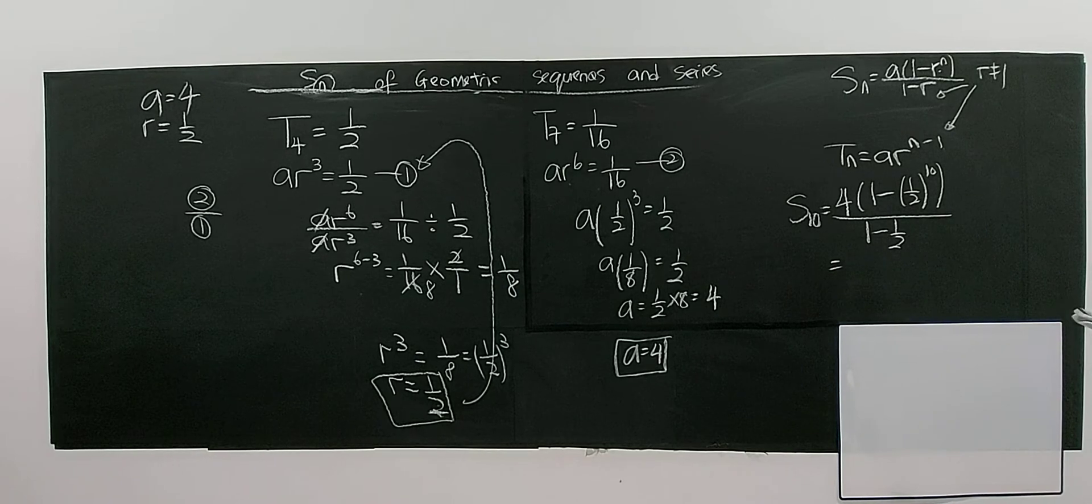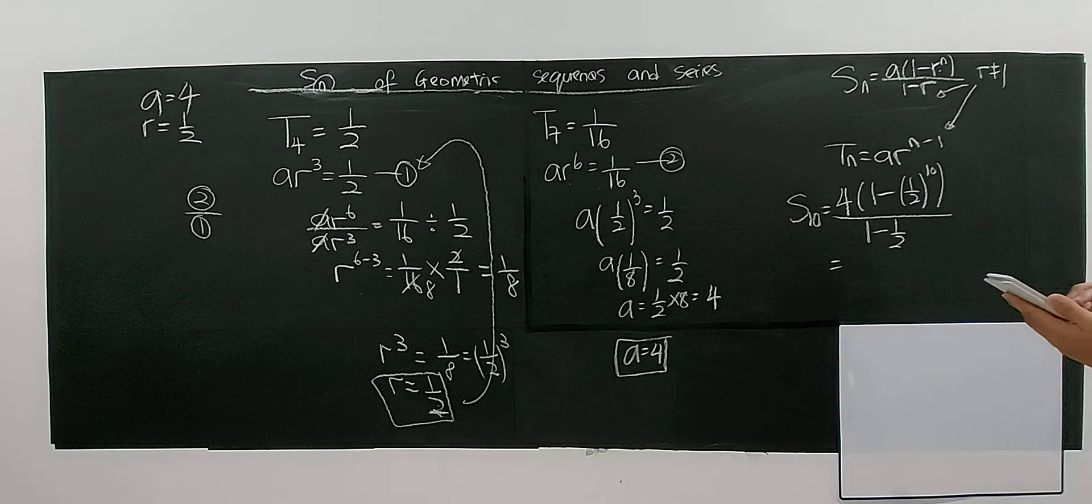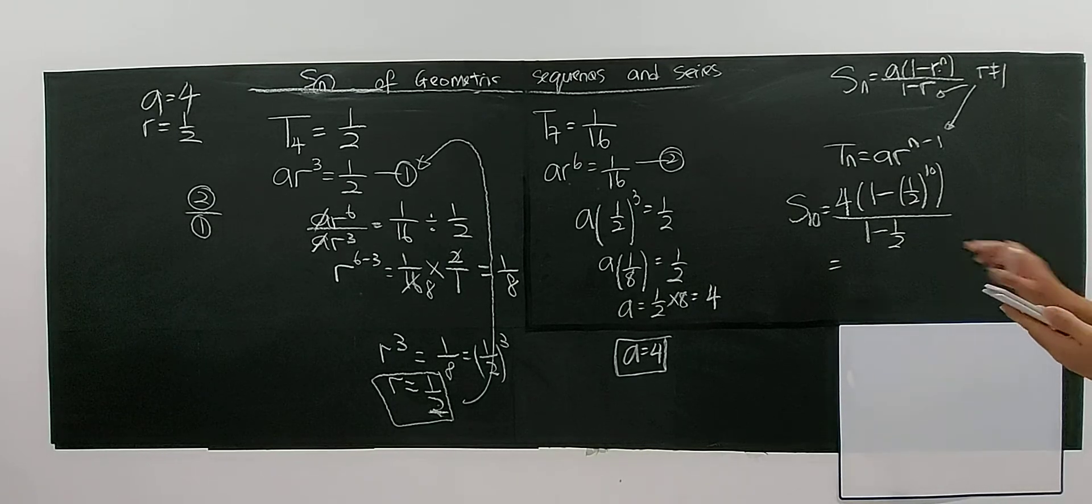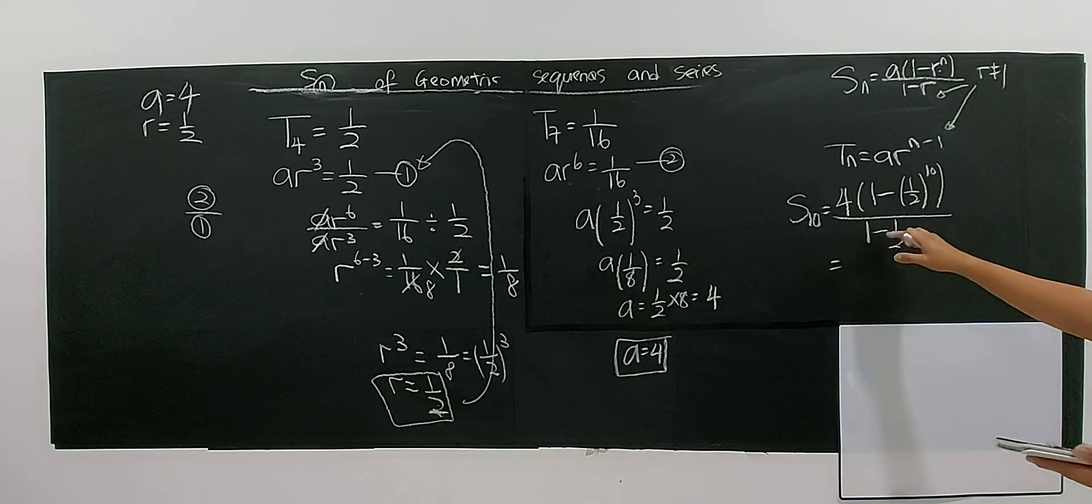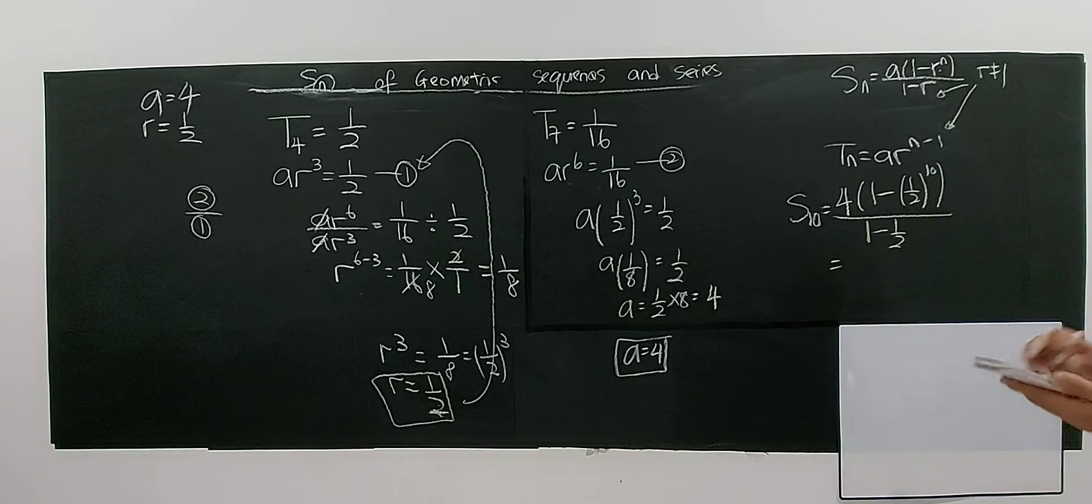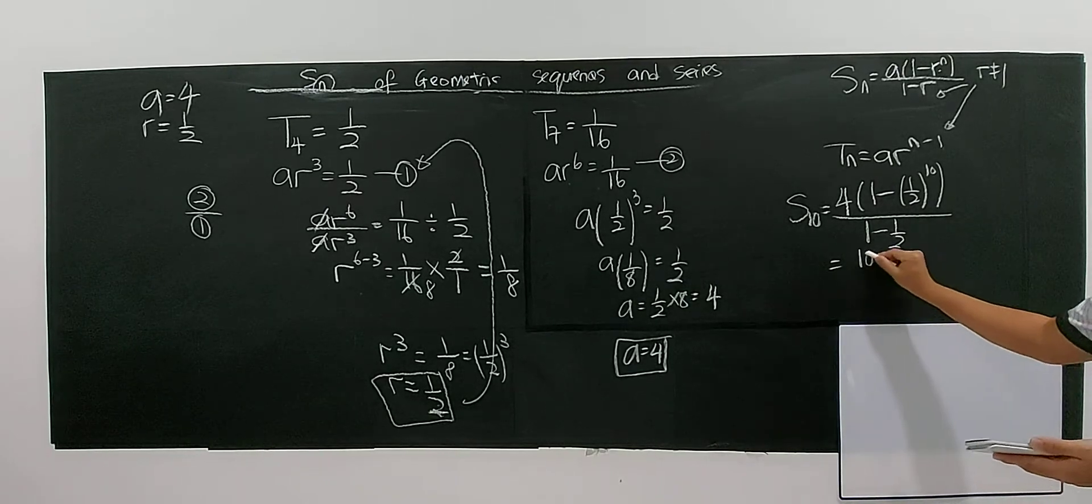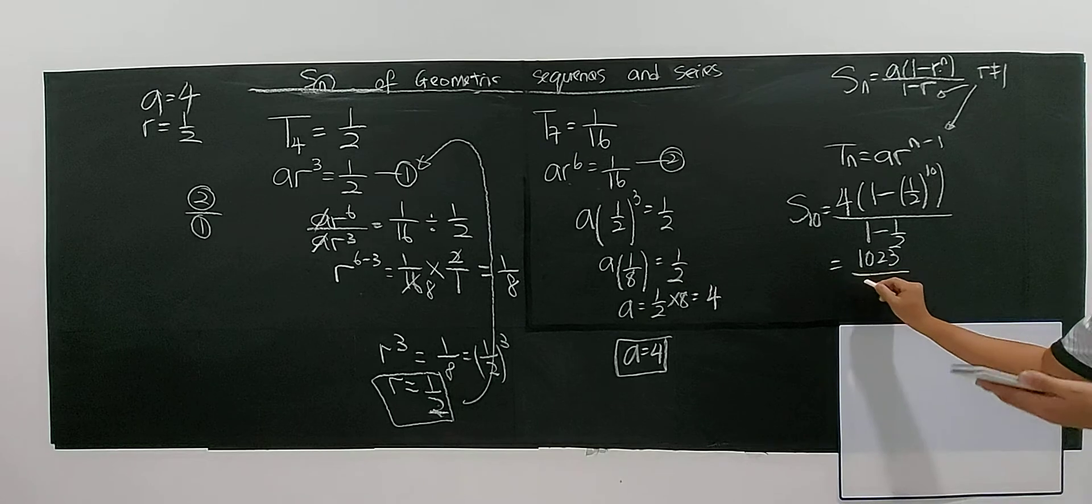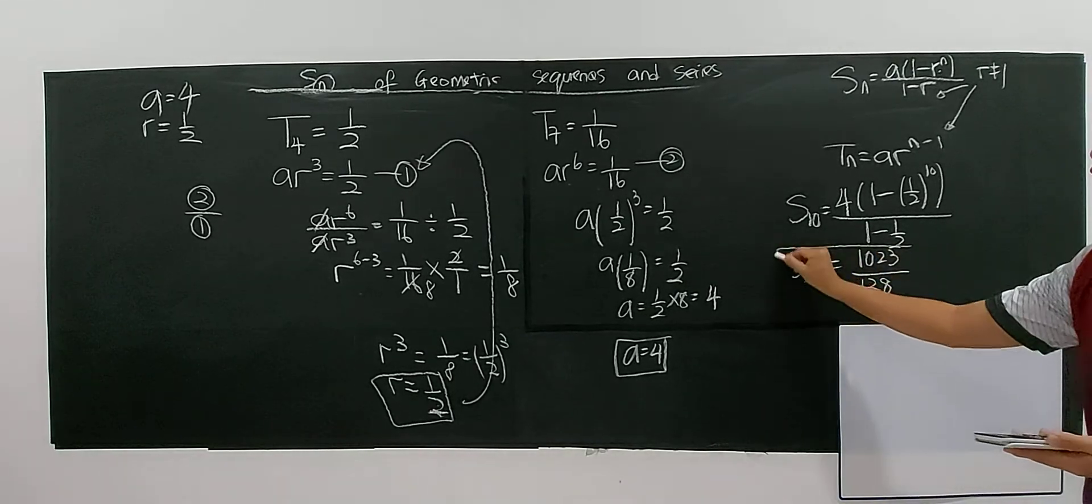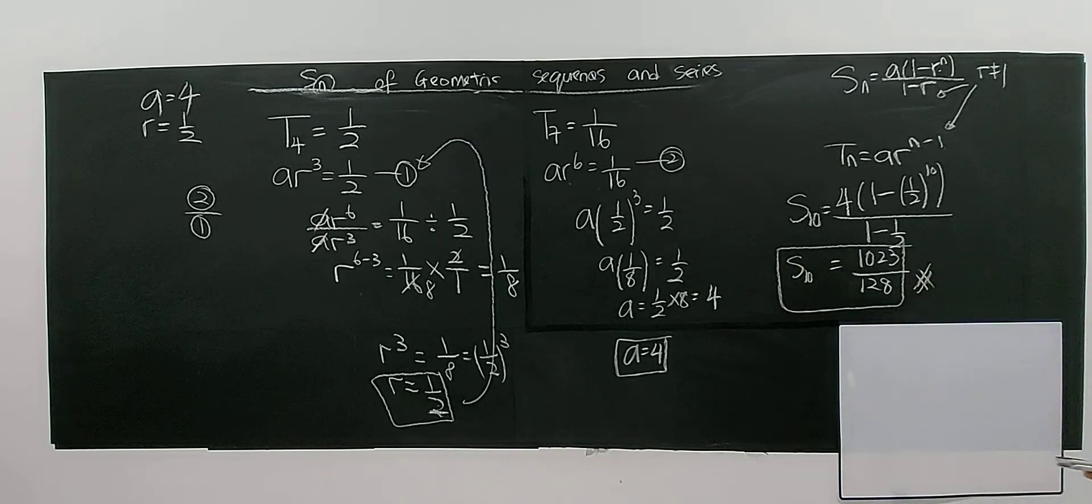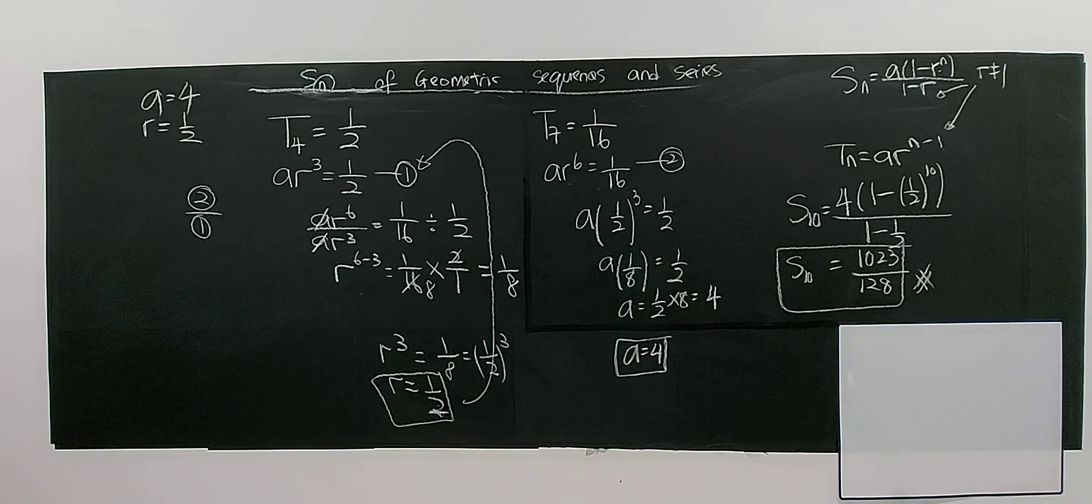So 1 minus 0.5, I write this to be 0.5 to the power of 10, power of 10, bracket divided by 0.5, 1 minus 1 over 2 is 0.5, half. And multiply by the 4. And multiply by the 4, you have 1023 over 128 as your value for sum of the first 10 terms. Alright, okay. This question is considered as easy.